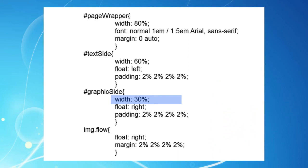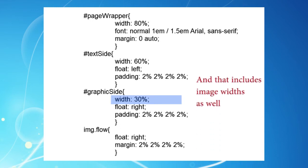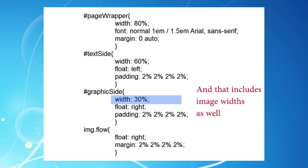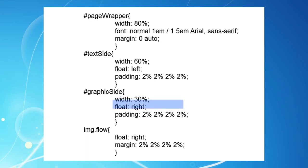So as PageWrapper narrows, so automatically do the widths of these two divs. And since the image sizes are also linked through percentages to the widths of the divs that they are in, they will change also — and that's how fluidity works. Even the padding and margin values are in percentages. There are no fixed sizes anywhere on our page.